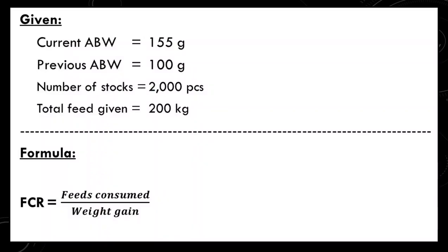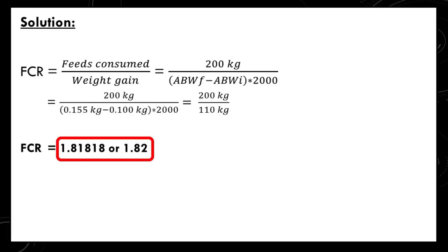The available information are: the current ABW is 155 grams, the previous ABW is 100 grams, the total number of stocks is 2000 pieces, and the total feed given is 200 kilograms. The formula is FCR equals feeds consumed divided by weight gain. Weight gain is computed by subtracting current ABW from previous ABW. 155 grams (0.155 kg) minus 100 grams (0.1 kg), multiplied by 2000 pieces, equals 110 kilograms. Using the FCR formula, 200 kg divided by 110 kg gives 1.82.